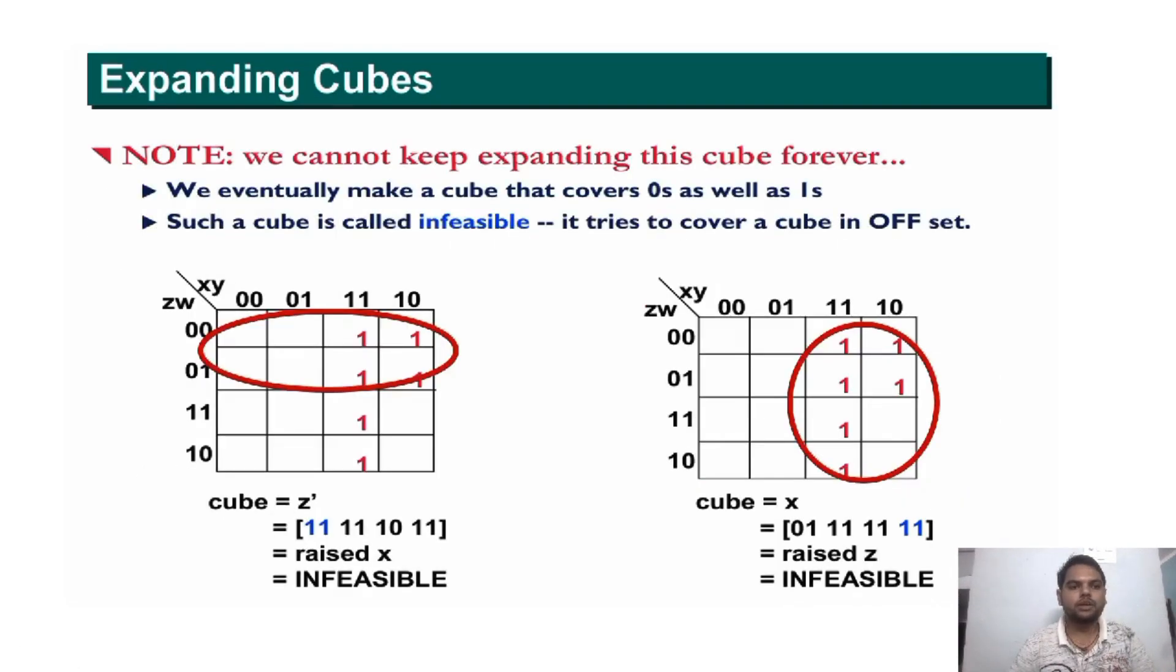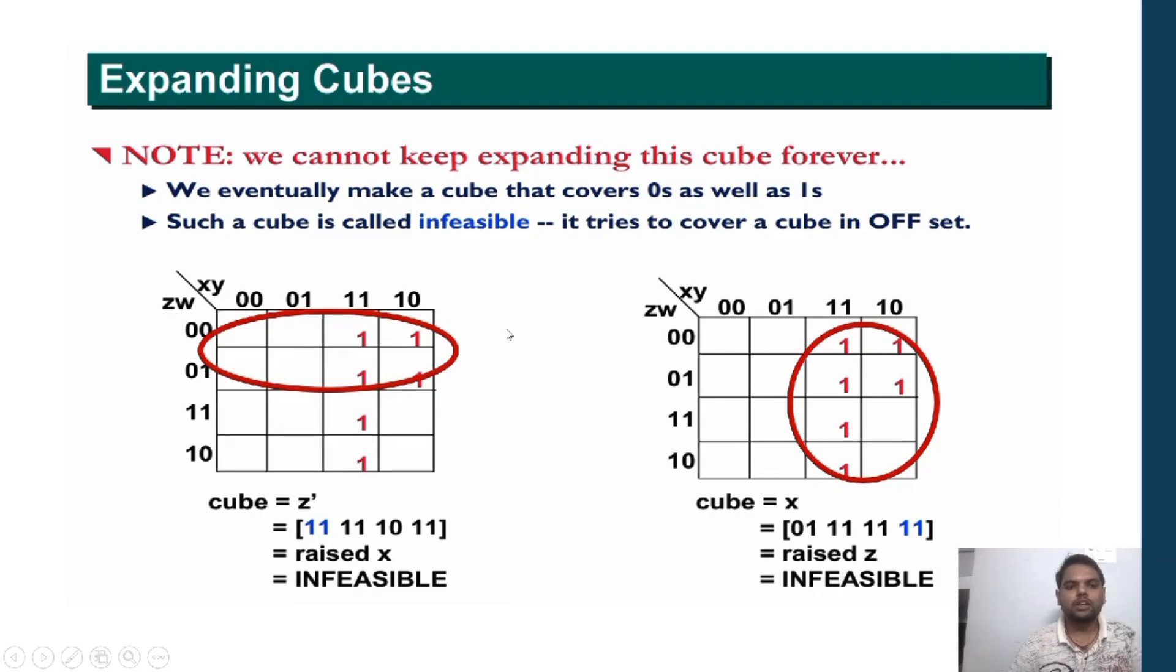For the stopping criteria of expansion of cubes, we have to take care about infeasible solutions. Like in this cube Z̄, there are four minterms covered along with four zero values, so it gives infeasible solution. Similarly here, in this cube X, there are six minterms along with two zero values, so it also gives infeasible solution. So we have to stop this.